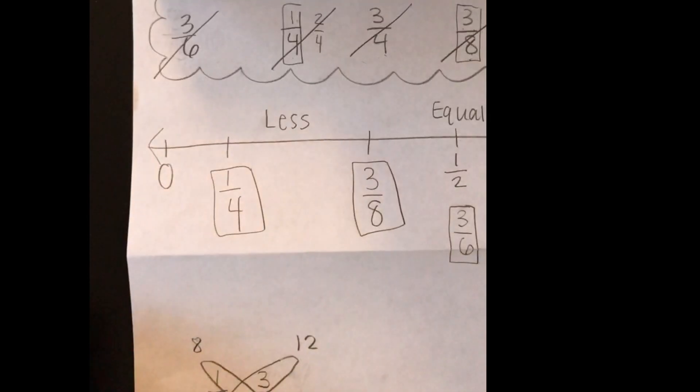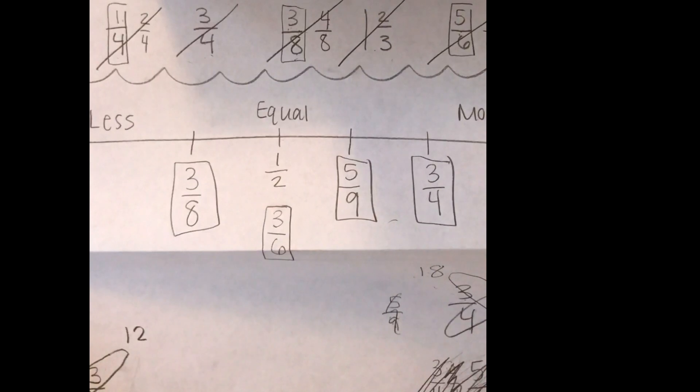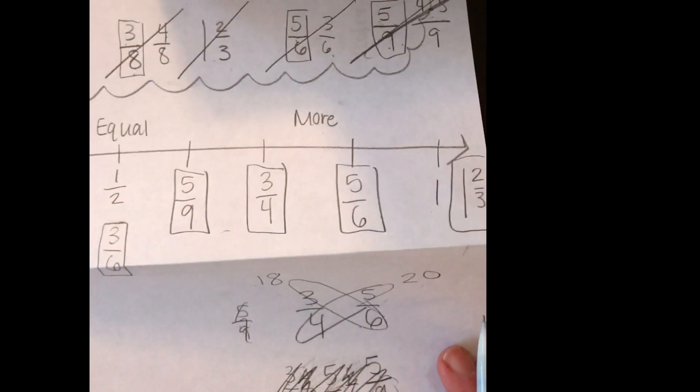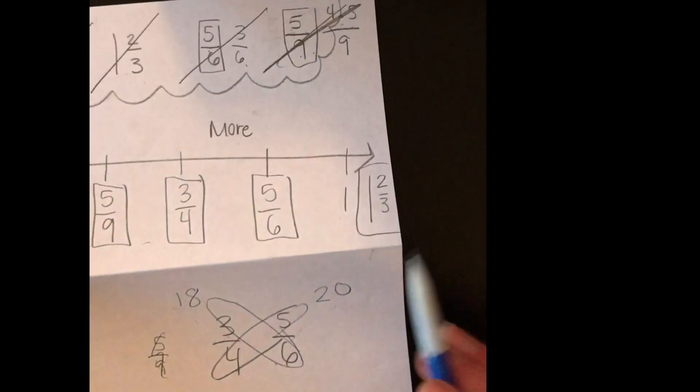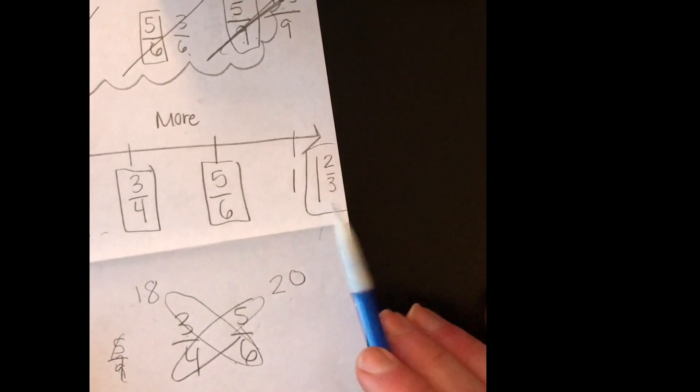So here we have 1 fourth, 3 eighths, 3 sixths, 5 ninths, 3 fourths, and 5 sixths, and of course our mixed number at the end, 1 and 2 thirds.